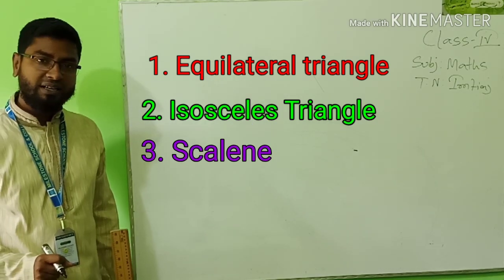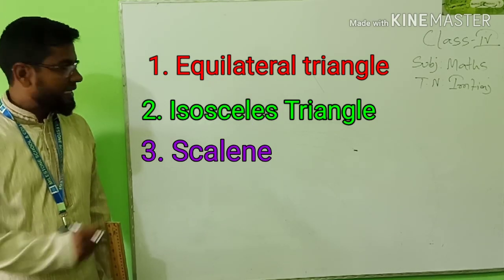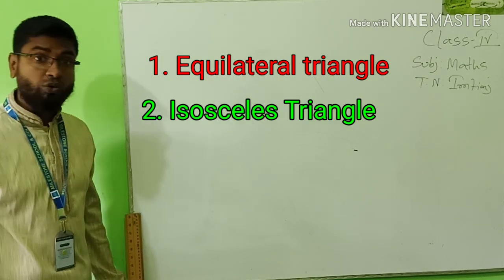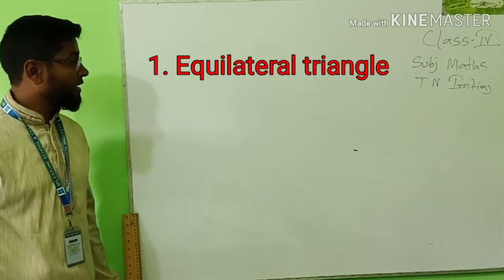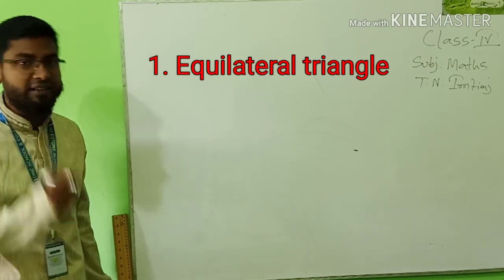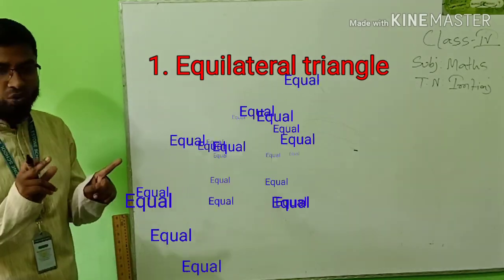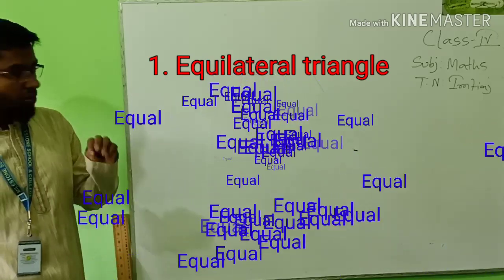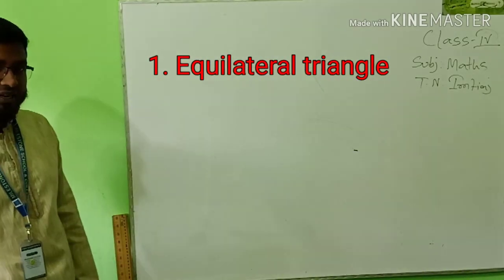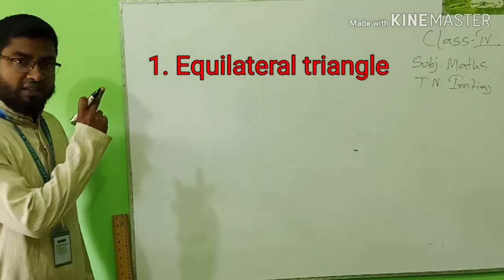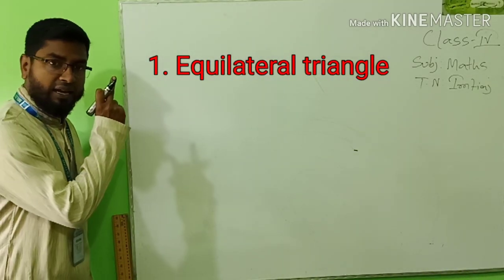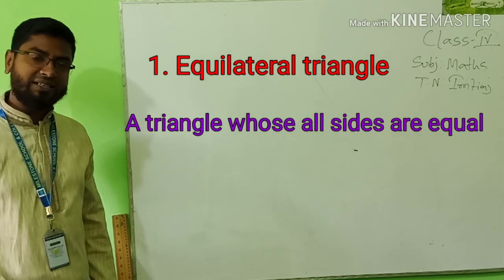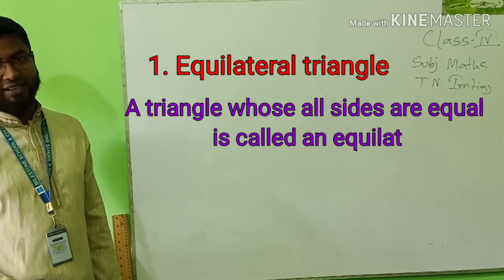Today we will learn the equilateral triangle first. The word 'equilateral' itself tells the definition — equal and all sides. So what will be the definition? A triangle whose all sides are equal is called an equilateral triangle.